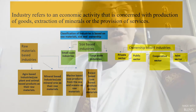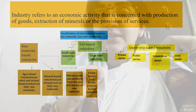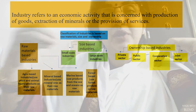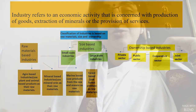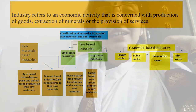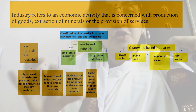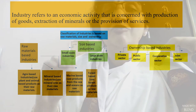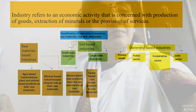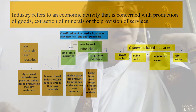Lastly, there are the forest-based industries. Products like honey — your Dabur honey — paper, wood, and timber are produced by forest-based industries. A good example is Dabur honey.